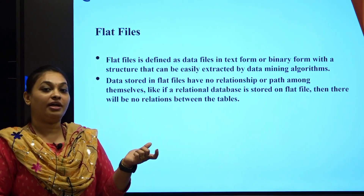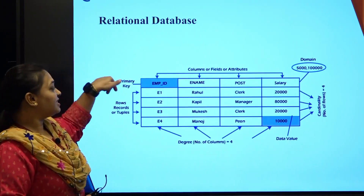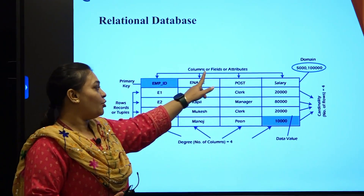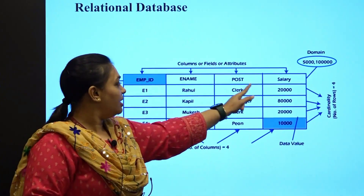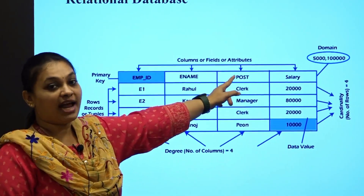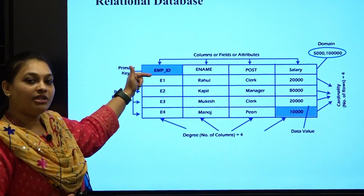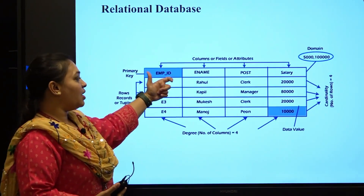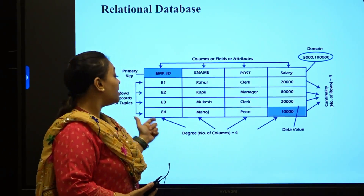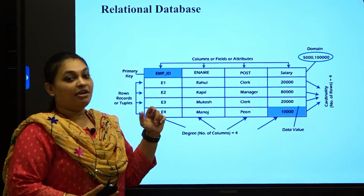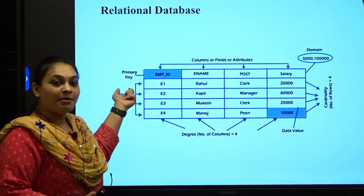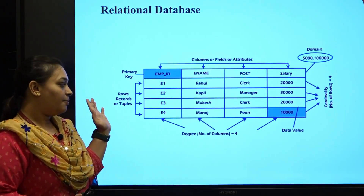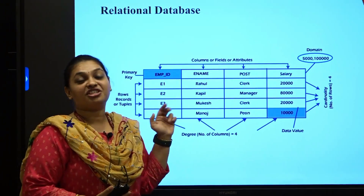Records are also called tuples. In the diagram shown, we have employee details: employee ID, employee name, post, and salary — these columns are your fields or attributes. The information in the rows — for example, employee ID E1, name Rahul, post Clerk, with some salary — are your records or tuples. A primary key is a unique key that cannot be repeated. Next, let's move on to the transactional database.